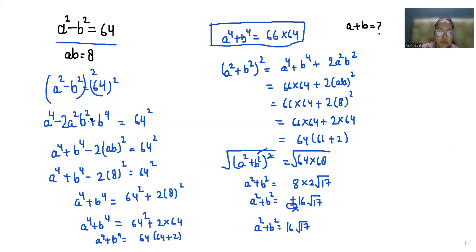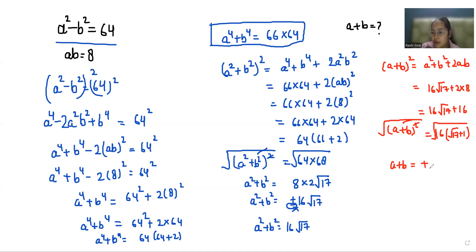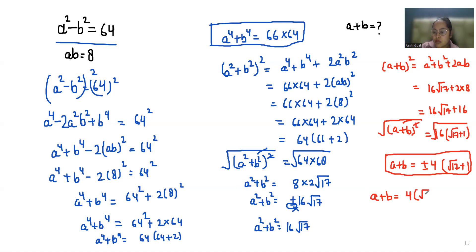Now we have to find a plus b. Using the identity (a plus b) whole square equals a squared plus b squared plus 2ab, where a squared plus b squared is 16 root 17 and ab is 8: so (a plus b) squared equals 16 root 17 plus 16, taking 16 as common gives 16 times (root 17 plus 1). Taking square root both sides: a plus b equals plus or minus 4 times root of (root 17 plus 1). So there are two values: 4 root (root 17 plus 1) and minus 4 root (root 17 plus 1).